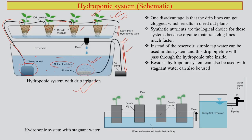If the drip supply stops for some time, the plant will certainly suffer from water stress. Synthetic nutrients are the logical choice for this kind of system because organic materials can clog pipelines much faster. Instead, you can put synthetic nutrients in solution form so they travel with the water and get delivered drop by drop into the media.